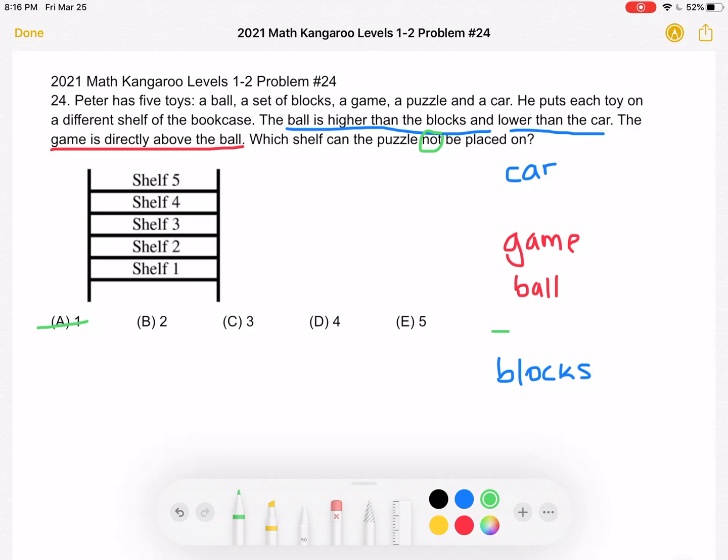What about two? If it's on shelf two, it would be right here. That's also fine. It's not interfering with our order. So it's not B.